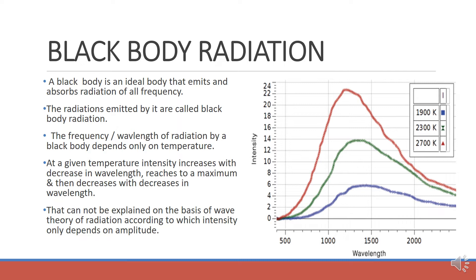We can see the curve here where intensity of the radiation is shown with respect to wavelength. When the wavelength decreases, the intensity increases and it reaches a particular maximum value at the peak, and after that it decreases with further decrease in wavelength. This behavior could not be explained by wave theory, because wave theory suggests that intensity of light is dependent only on the amplitude of the wave — it does not depend on wavelength or frequency. But this behavior was exactly opposite to Maxwell's wave theory.